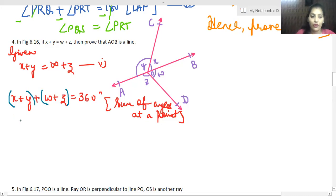So now from equation one, see from equation one, I took the value of w plus z as x plus y. So here see, x plus y plus x plus y is equal to 360 degrees.